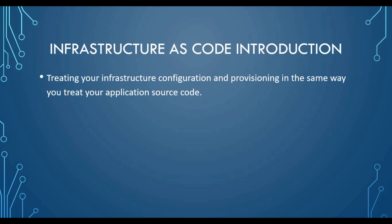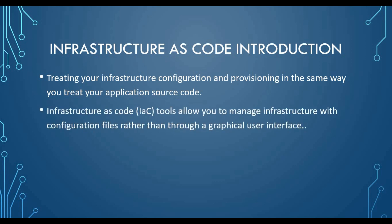Infrastructure as code means treating your infrastructure configuration and provisioning the same way you treat your application code. Just like you write application code and put it in a GitHub repository with version control — having a workflow for build and test — similarly, infrastructure has become more like software. You write down your code, put it in Git with version control, and if somebody wants to make changes, version control manages that.